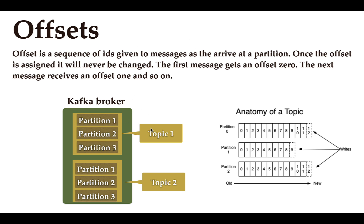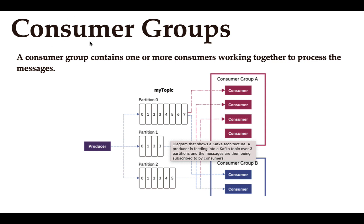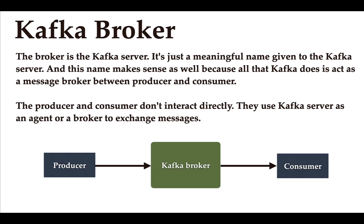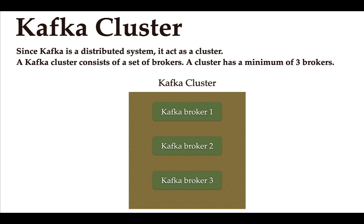What is a consumer group? In the diagram we can see a topic called 'my topic' with multiple partitions — partition 0, partition 1, partition 2 — and many consumers consuming data from it. These consumers are grouped: consumer group A contains four consumers and consumer group B contains two consumers. A consumer group contains one or more consumers working together to process messages.